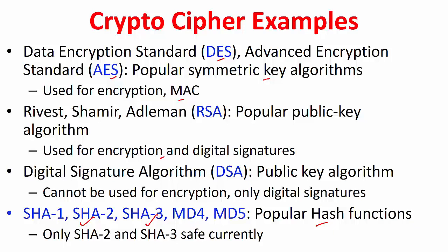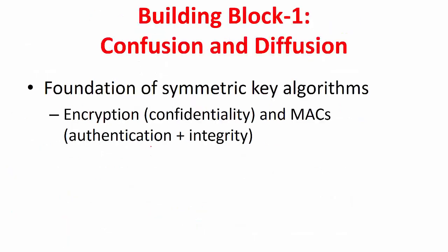Before we dig into the actual mechanisms of how confidentiality and integrity are provided, it is good to understand the basic building blocks behind these algorithms, which we will look at under background. The first building block is confusion and diffusion — this is the foundation of symmetric key algorithms, which in turn are used to provide confidentiality, integrity, and authentication.